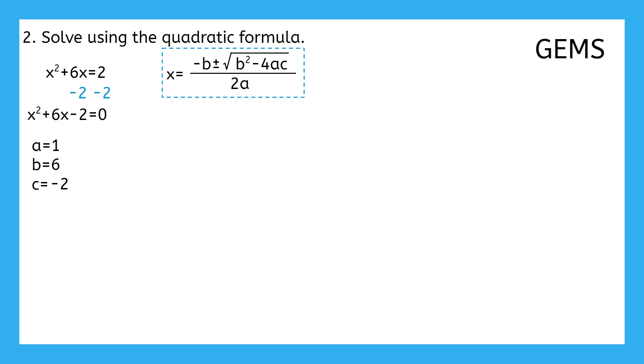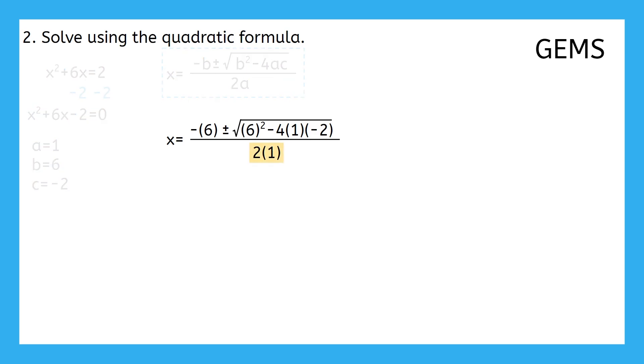After substituting in those values, your equation should look like this. Starting with the denominator grouping, 2 times 1 simplifies to 2, and now we're ready to tackle the numerator grouping. Within the numerator, we have a subgrouping under the radical symbol. 6 squared is 36, then negative 4 times 1 is negative 4, and negative 4 times negative 2 is positive 8. 36 plus 8 gives us 44.